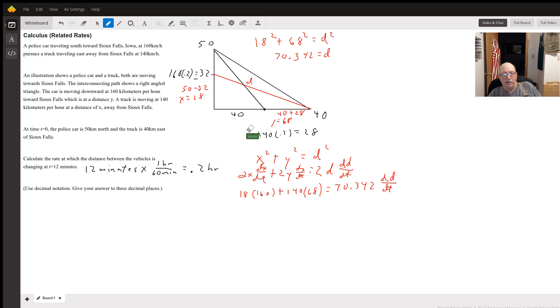That's where the two vehicles started off. The police car was 50 miles north heading south and the other guy was heading east and he was 40 miles from Sioux Falls.